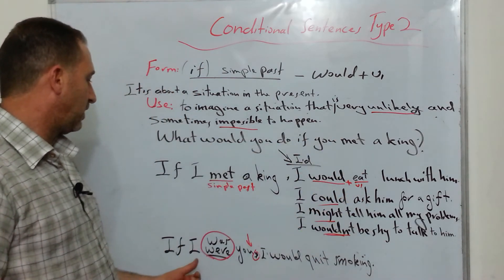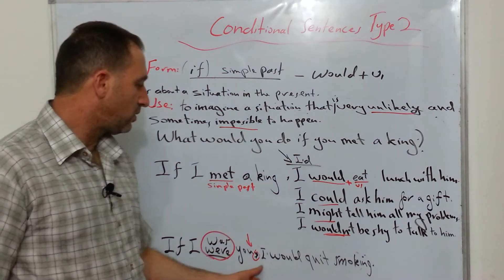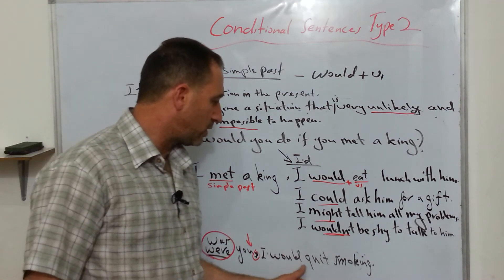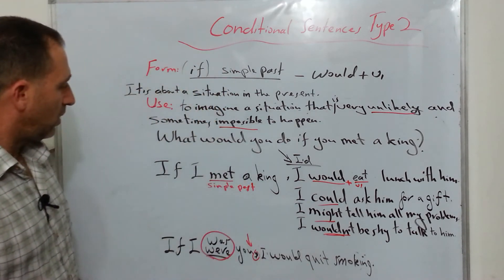So this is what's going to happen. If I were verb 2, you, and the second part includes would plus verb 1, quit. Quit means stop.